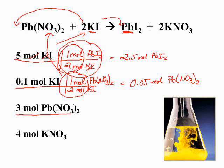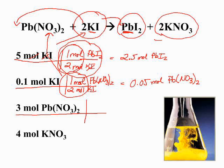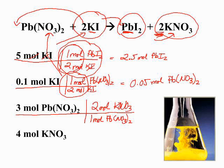Now let's pick our other reactant, lead 2 nitrate, and choose a random amount — 3 moles of lead 2 nitrate. We can use that to solve for how much potassium nitrate product would be formed. According to the balanced equation, 1 mole of lead 2 nitrate produces 2 moles of potassium nitrate — the coefficients in front of the formula. So from 3 moles of lead 2 nitrate, you produce twice as much, or 6 moles of potassium nitrate.